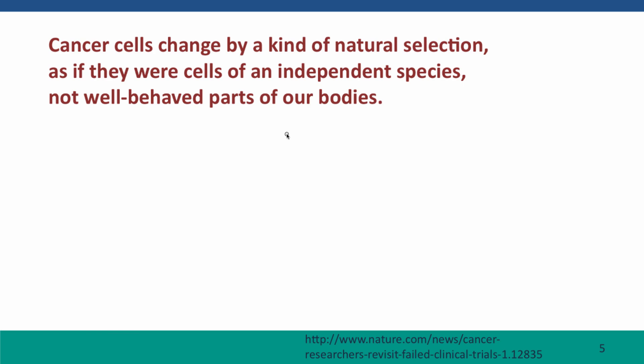All of this happens because cancer cells have mutations that cause them. A cancer cell arises with a mutation causing it to grow when it shouldn't. But once these mutations exist, cancer cells then go on to change by a kind of natural selection. Mutations arise, and depending on the effects of these mutations, these mutant cells persist or are lost from the tumor — as if these cells were an independent species, not trustworthy, well-behaved parts of our bodies.